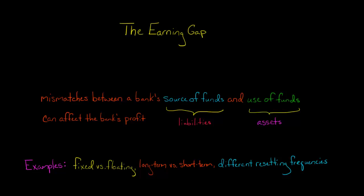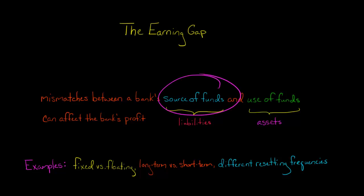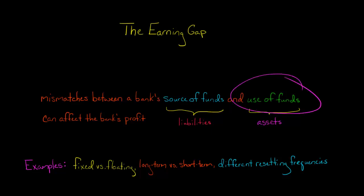One of the gaps that a bank is trying to manage with asset liability management is the earning gap. The earning gap occurs because there's an asset liability mismatch — specifically, a mismatch between the source of funds (the bank's liabilities) and the use of funds (the bank's assets). There could be a number of these different types of mismatches.